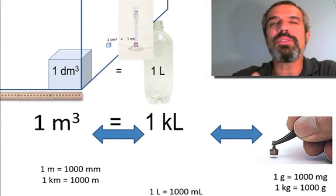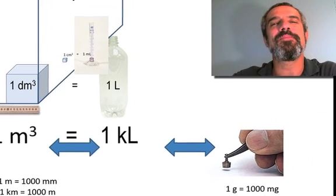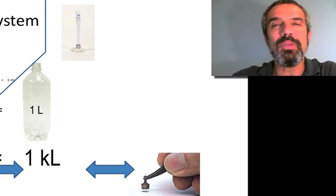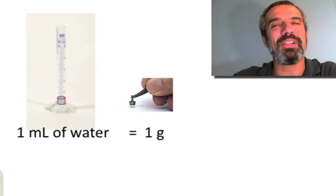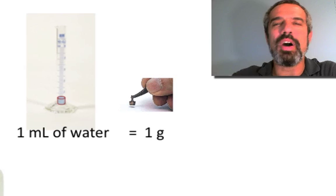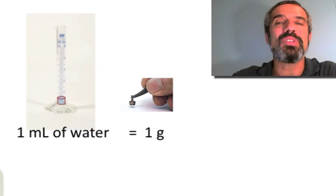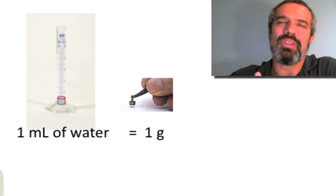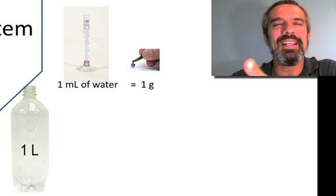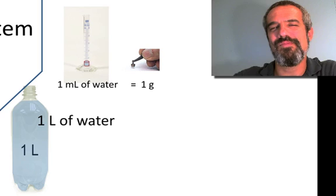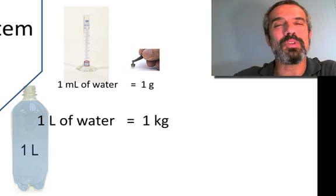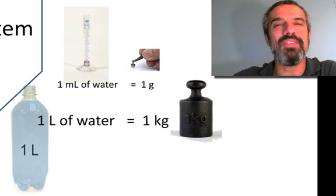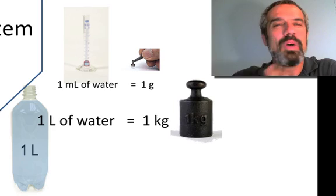Now, what's the connection to grams? That one milliliter of water we talked about — guess what? It weighs a gram. Technically, water is most dense at 4 degrees Celsius, but even at room temperature a milliliter of water is pretty much a gram. So what does that mean for a liter of water? A liter is a thousand times bigger, so a liter of water equals one kilogram. Pick up a one-liter water bottle and you've just picked up a kilogram.